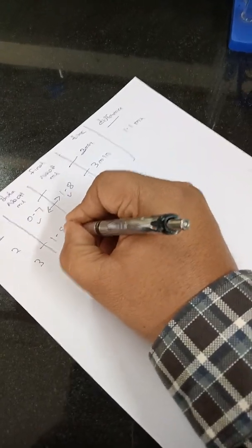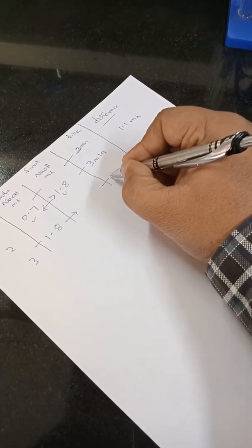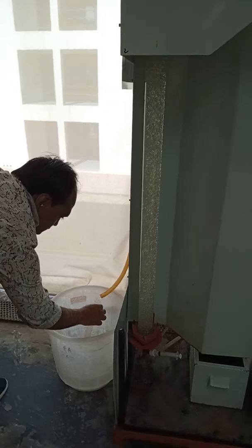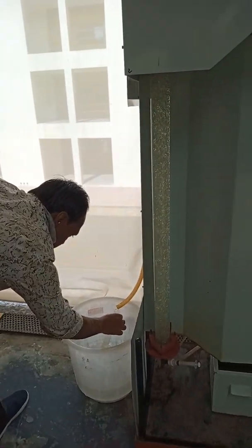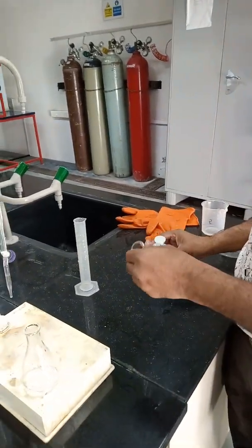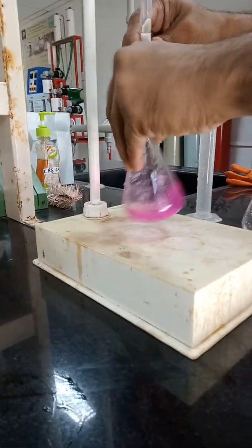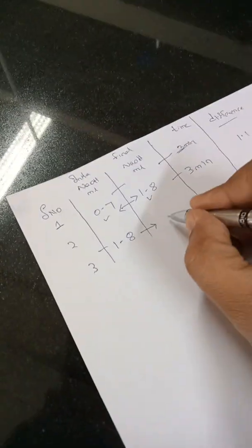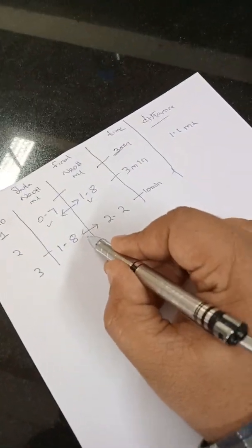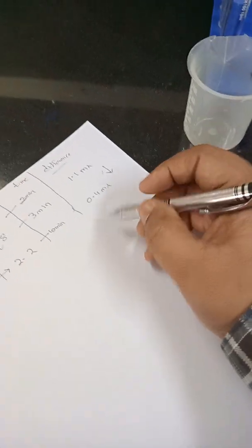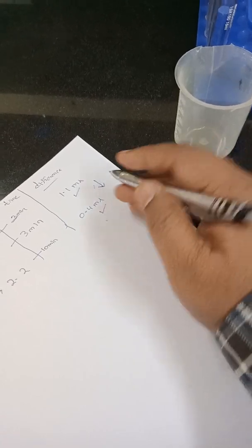Let us see how much NaOH is consumed after about 10 minutes. We take sample number two after 10 minutes and perform the same titration — adding indicator to 10 ml of sample. The burette reads 2.4 and settles at 2.2, so the difference between 2.2 and 1.8 is 0.4 ml. The concentration is dropping — initially 1.1 ml was consumed, and after 10 minutes only 0.4 ml is consumed.